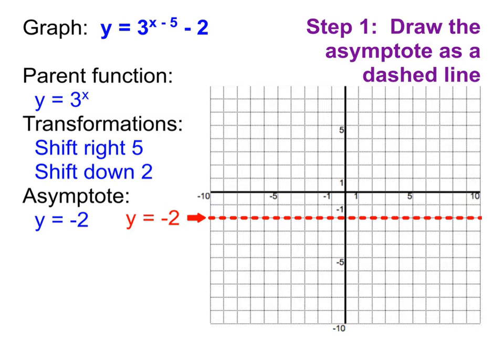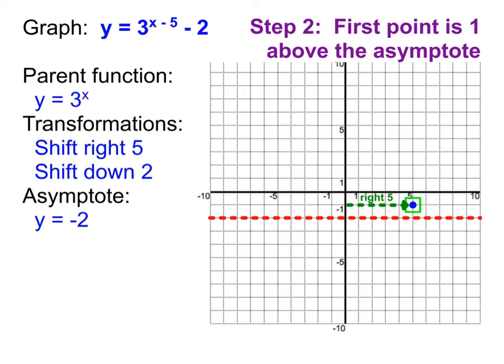Now that I have my asymptote, I need to draw my first point. Now, remember that our first point is normally up 1, but this one is moving. So, it's normally up 1 from the asymptote. In this case, it is moving right 5. And so I'm going to take that point, and I'm going to move it to the right 5, which means that is now my first point. It's 1 above the asymptote still, but it's over to the right 5 units. Now that I've done that, I now don't need to worry about any of the transformations anymore. That's the beautiful thing about these. Once you've done these, you're done with them.